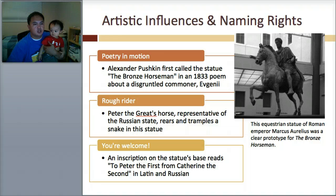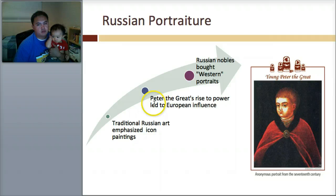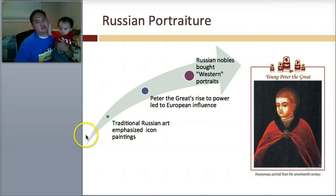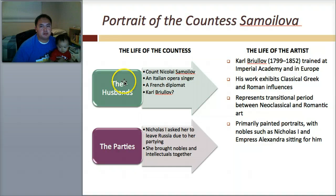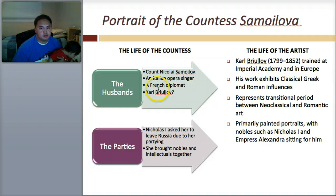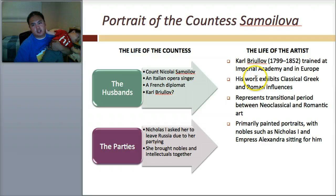Next, we're going to talk about portraiture. We talked about architecture, now let's get into the art. Remember in the beginning, all of it was icon paintings, and then Peter the Great rose to power and brought a lot of Western portraits. The first portrait you need to know is called the Portrait of the Countess Samalova. The Countess had many husbands — Count Nikolai Samalova, an Italian opera singer, a French diplomat, and probably Karl Briolov, but we don't know that for certain. Nicholas the First asked her to leave Russia due to her partying. She brought nobles and intellectuals together. The artist was Karl Briolov, trained in the Imperial Academy — the one Catherine started. His work exhibits classical Greek and Roman influences, represents a transitional period between neoclassical and romantic, and he primarily painted portraits.